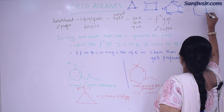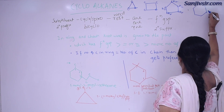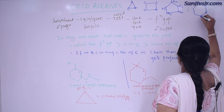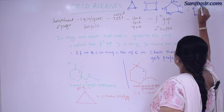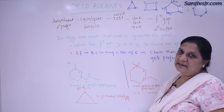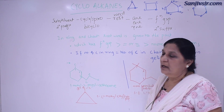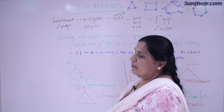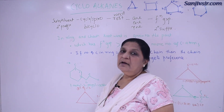Cyclohexane. There are bicyclo compounds also. This will be called cyclohexane. So these are the cyclic compounds.